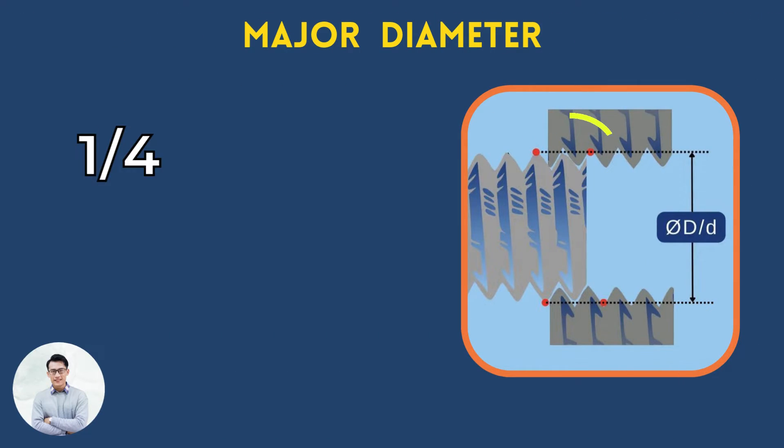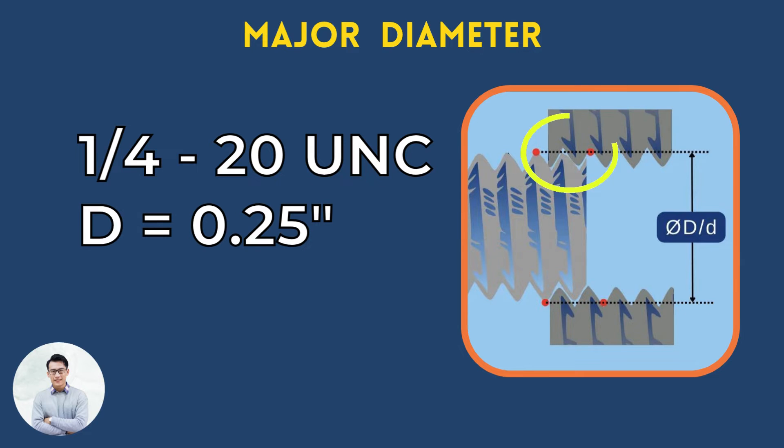For example, in a UNC quarter-inch thread, the nominal major diameter is a quarter of an inch, 6.35 millimeters.